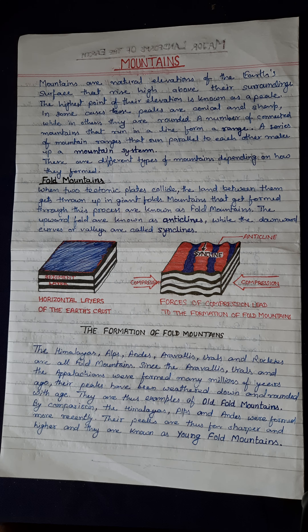Mountains are natural elevations of the earth's surface that rise high above their surroundings. The highest point of their elevation is known as a peak. In some cases these peaks are conical and sharp, while in others they are rounded. A number of connected mountains that run in a line form a range. A series of mountain ranges that run parallel to each other make up a mountain system. There are different types of mountains depending on how they form.